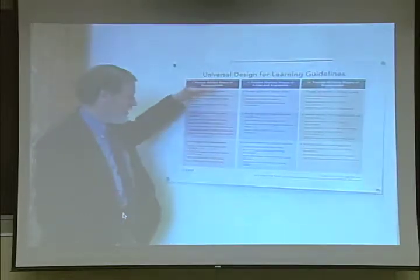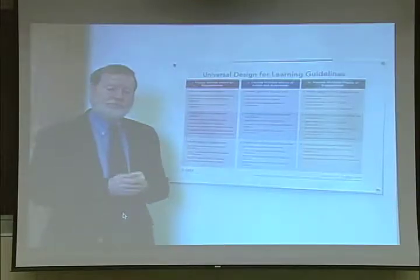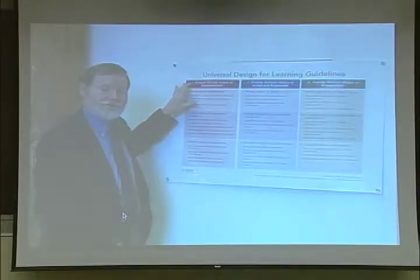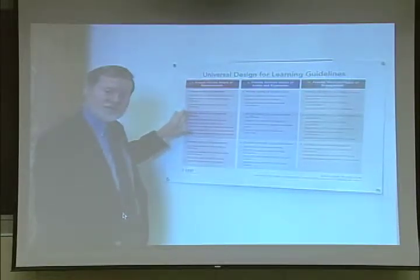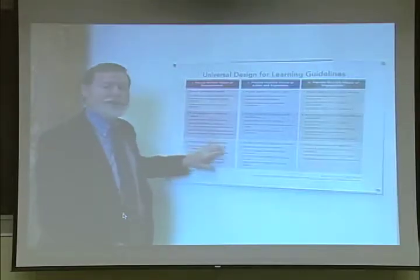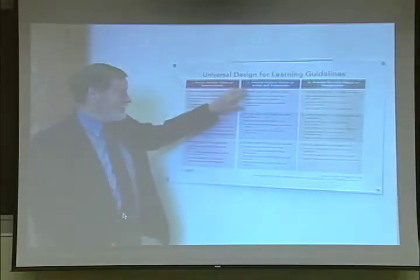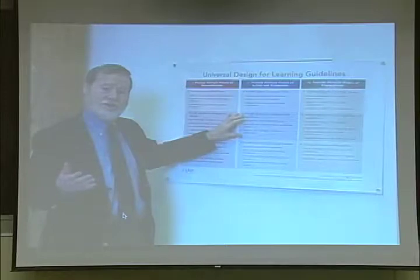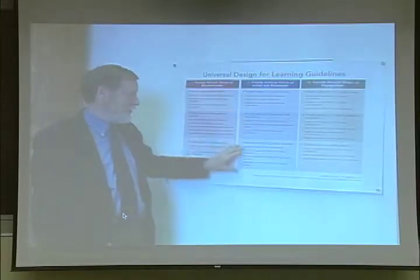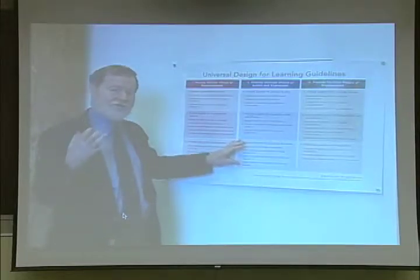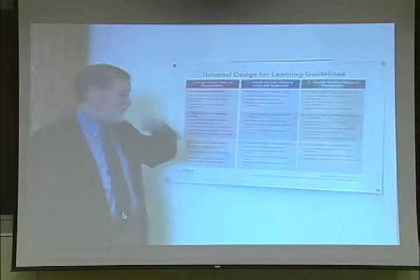The other guidelines are really part of getting there. We need to make sure everybody can receive the world from which they're going to learn, and whatever is put in language and symbols needs to be interpretable — but it's really to get to the comprehension we want. Similarly, we want every child to be able to act on the world and be skillful in communication, writing, and speaking, but the goal is to reach executive functions where they can plan, deliver, and monitor their progress.